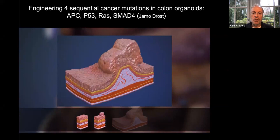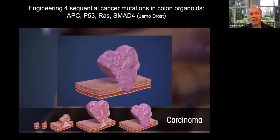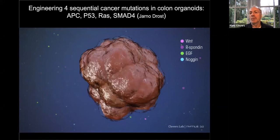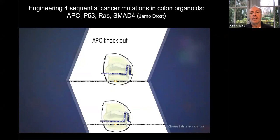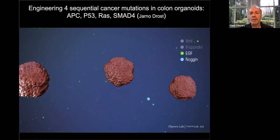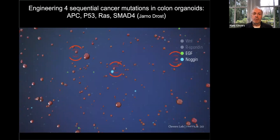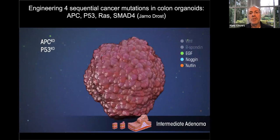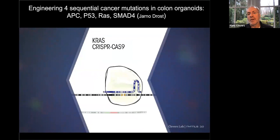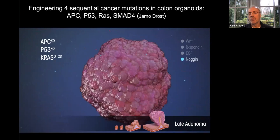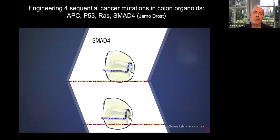Vogelstein and Fearon in 1990 proposed an ordered array of mutations taking a normal colon cell through adenoma stages to malignant, invasive, metastasizing colon carcinoma — first APC, then KRAS, then SMAD4, then p53. Starting from a normal human colon organoid, we target APC with CRISPR and remove Wnt and R-spondin: every cell dies except APC mutants, which predictably grow out. Then target p53 — two alleles — and select mutants with Nutlin. Then knock in KRAS G12D using a 100-base-pair oligo and remove EGF. Finally target SMAD4 and remove Noggin — only SMAD4 mutants grow out.